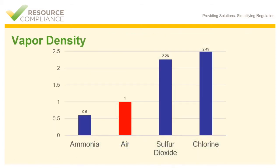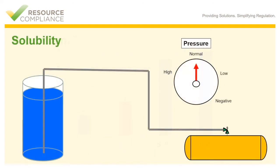Ammonia's vapor density is 0.6, with air being a vapor density of 1. This reveals ammonia is lighter than air. Therefore, when released at ambient pressure, ammonia will rise.